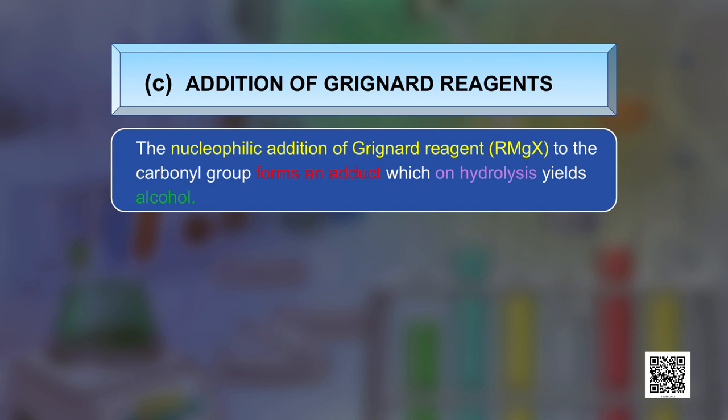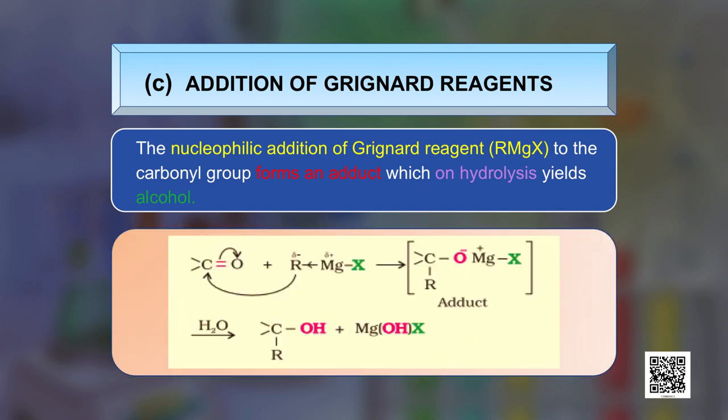The third reaction is addition of Grignard reagents. Nucleophilic addition of RMgX to a carbonyl compound forms an adduct, which on hydrolysis gives an alcohol. Starting from formaldehyde (methanal) gives a primary alcohol; starting from other aldehydes gives a secondary alcohol; and starting from a ketone gives a tertiary alcohol. Thus all three types of alcohols — primary, secondary, and tertiary — can be obtained from this reaction.